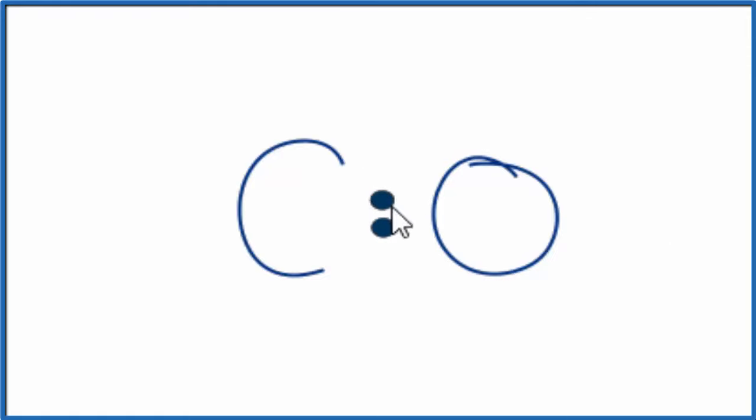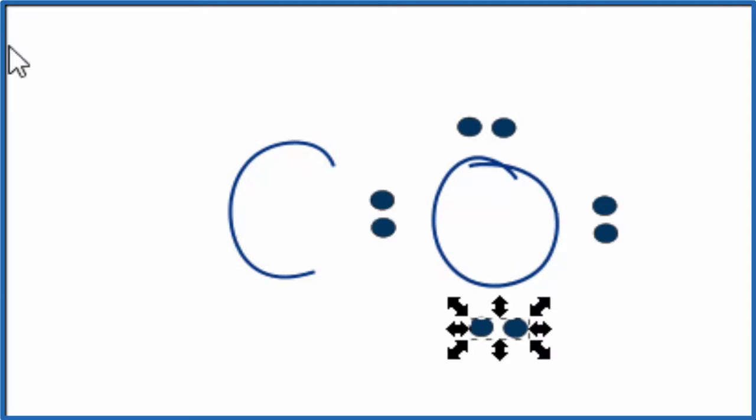Then we can go around and complete the octets on the other elements. So we have 10 total valence electrons. We've used six, eight, and then let's just put two on the carbon here, and we've used all 10 valence electrons.